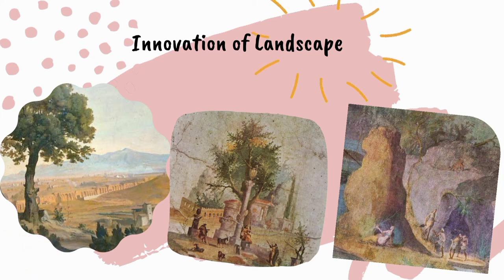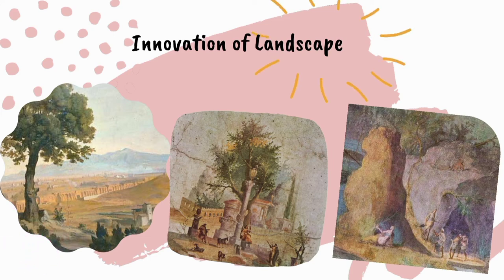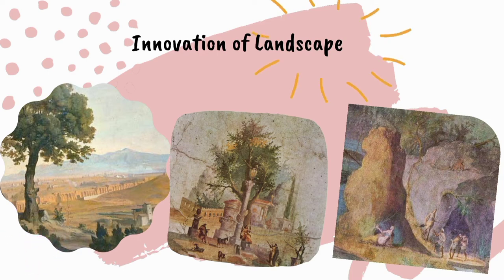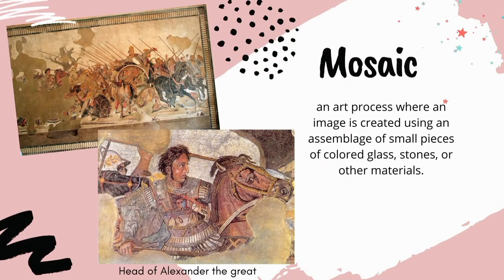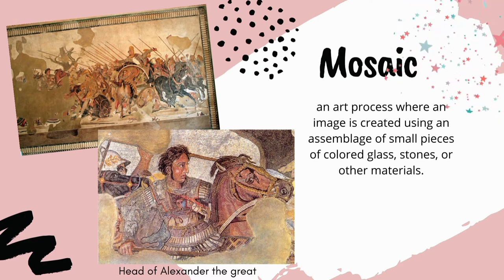Some landscapes feature scenes of nature like gardens with flowers and trees, architectural vistas depicting urban buildings, and landscapes showing episodes from mythology. The Romans also made pictures from colored tiles called mosaics.